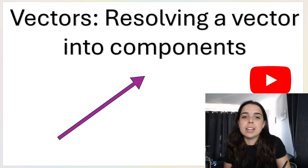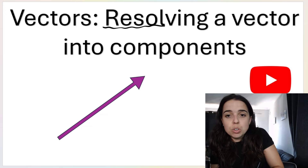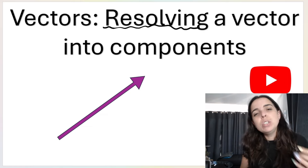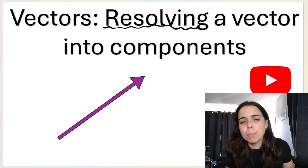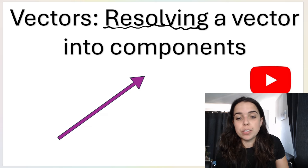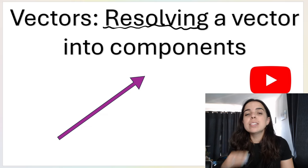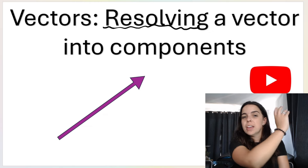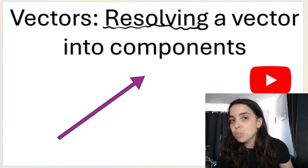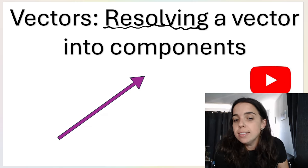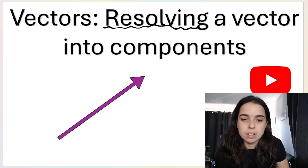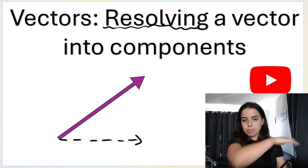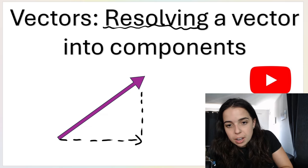The first thing to understand is the word 'resolving.' I've been using 'resolving' and also 'breaking down a vector into components.' What do I mean by components? Looking at this diagram, this vector is going up and to the right. If I resolve or break that vector down into components, it will give me two vectors: one going to the right and one going up.